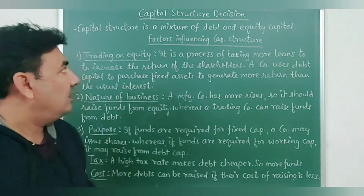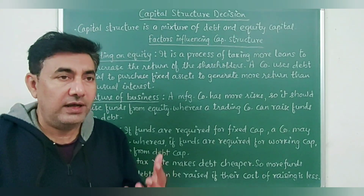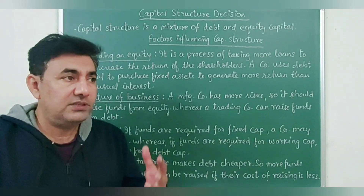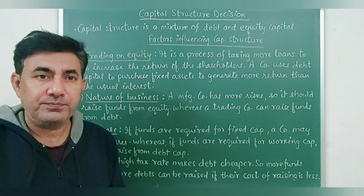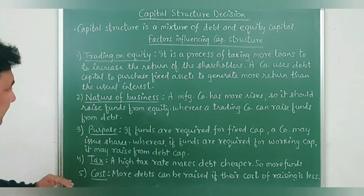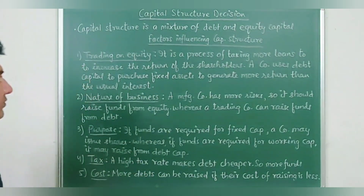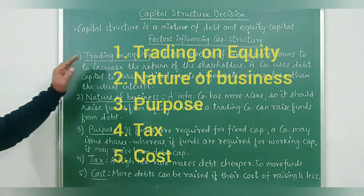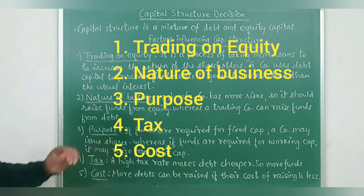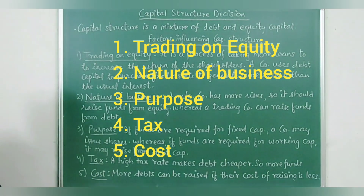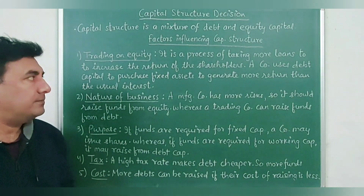A very important question that always appears in exams: what are the factors that influence capital structure? That is, how much debt capital and how much equity capital is to be raised by a company. There are five factors that basically influence the capital structure: first, trading on equity; second, nature of business; third, purpose of raising funds; fourth, tax; and fifth, cost.